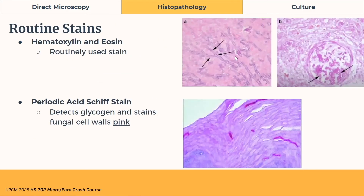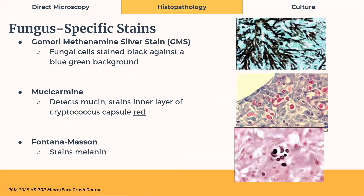However, you cannot identify the fungi from histopathology alone — it must be paired with culture and direct microscopy; you can only see fungal elements. Routine stains such as H&E show hyphal elements. Periodic acid-Schiff (PAS) protects glycogen and stains fungal cell walls pink. Fungal-specific stains include GMS (Gomori methenamine silver), which stains fungal cells black against a blue-green background. Mucicarmine detects mucin and stains the inner cell of Cryptococcus red. Fontana-Masson stains melanin — also used for Cryptococcus.